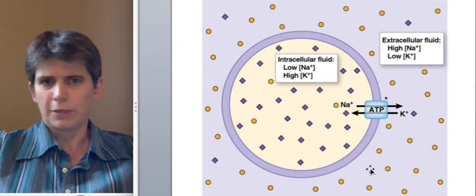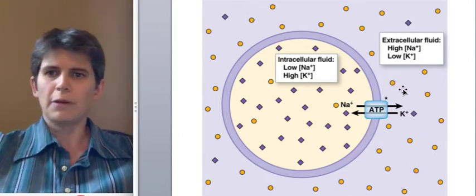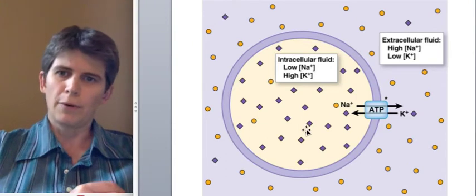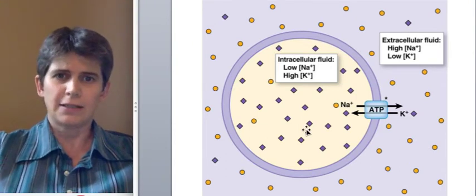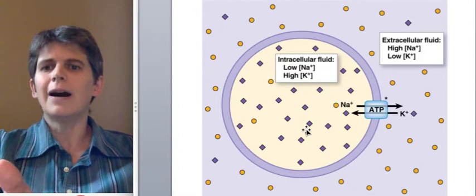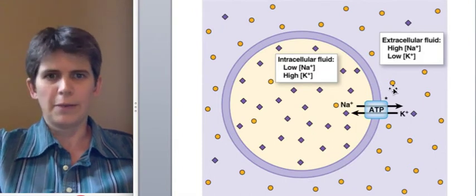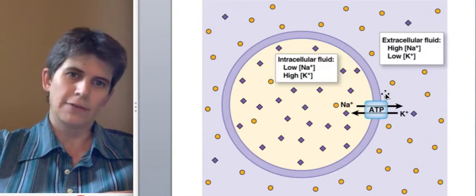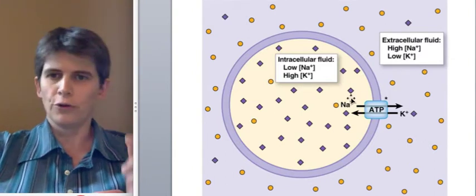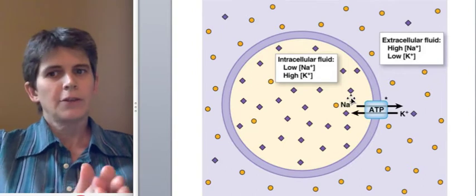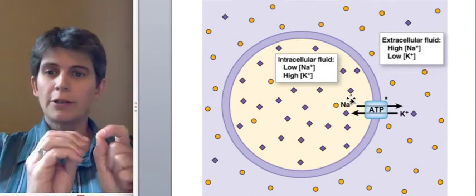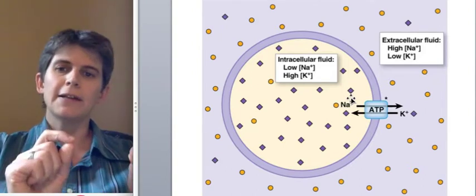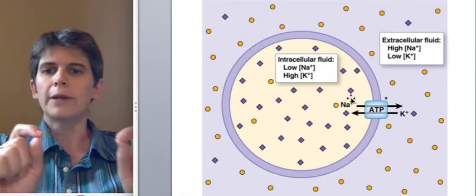So if you look at the colors in this picture, the yellow circles are meant to represent sodium and the purple diamonds to represent potassium. And you can see that these are very unequally distributed across the cell membrane, with typically more than ten times as much sodium on the outside of the cell membrane as the inside, and the reverse for potassium.